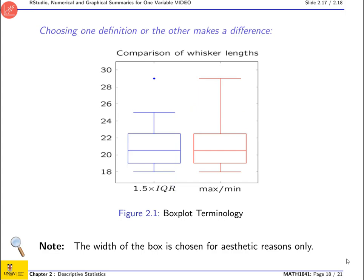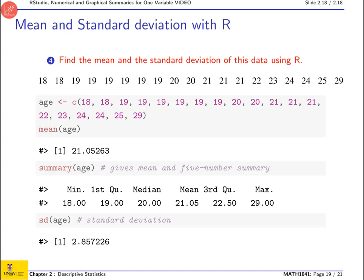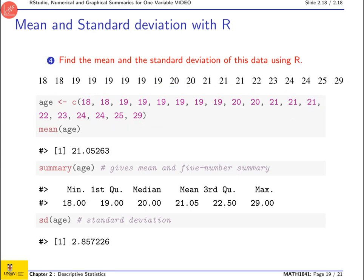Finally, we can use the software R to find the mean and the standard deviation of this data set. First, combine all your numbers into a variable called h. To find the mean it's really easy: mean of h. What you can also do is use a command called summary, which gives you the five-number summary and in addition gives you the mean — a lot of students really like this one because they get everything at once. To get the standard deviation you use sd of h, and R calculates it for you.